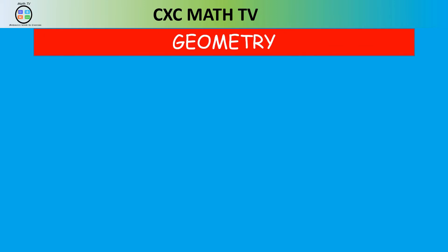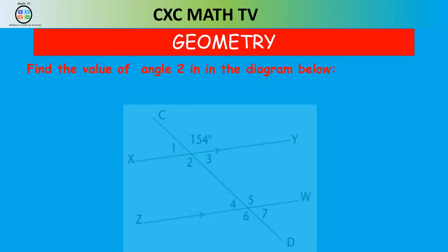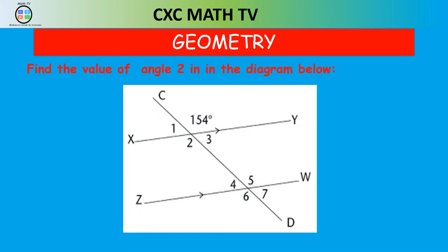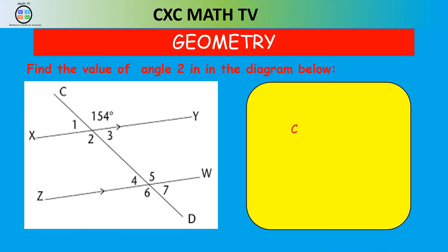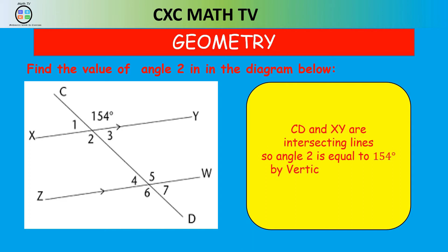Look at this diagram and find the value of angle 2. You are absolutely right if you said 154 degrees, because CD and XY are two intersecting lines, and so by vertically opposite angles, angle 2 is 154 degrees.